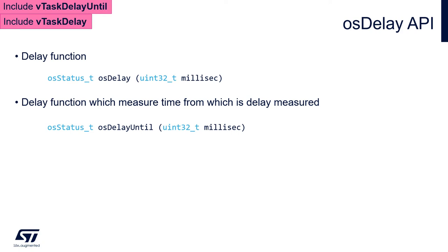Let's have a closer look at the delay functions available within FreeRTOS. We have two of them: OSDelay, which calls the FreeRTOS API function vTaskDelay, and the second one is OSDelayUntil, which calls vTaskDelayUntil.